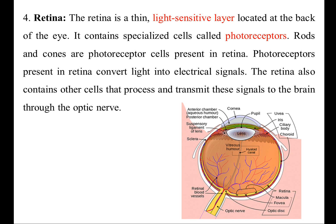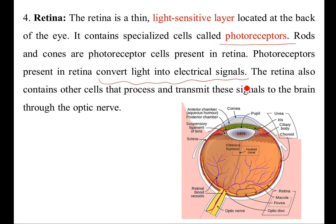Once light enters the lens, it falls on the retina. The retina is a thin, light-sensitive layer located at the back of the eye. It contains specialized cells called photoreceptors. Rod and cone cells are the photoreceptors normally observed in the retina. They convert light into electrical signals, enabling vision.